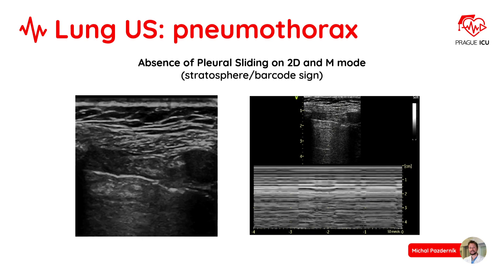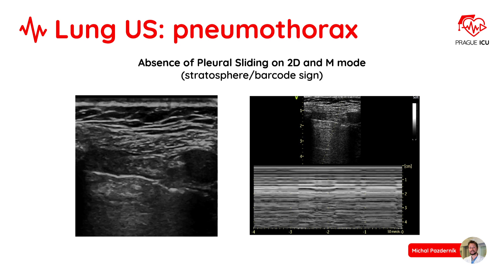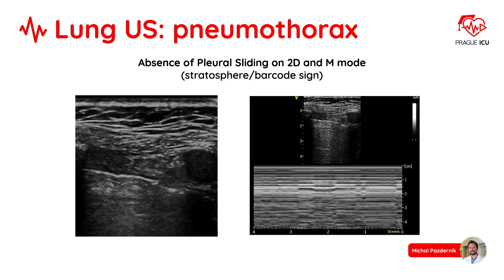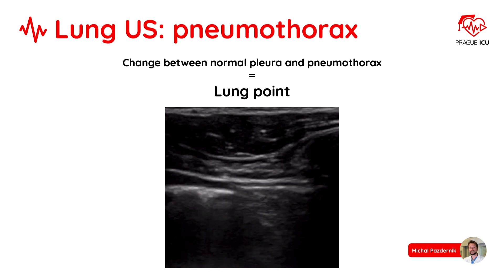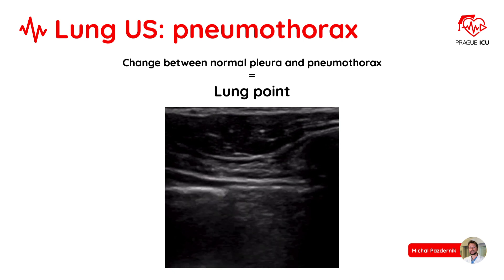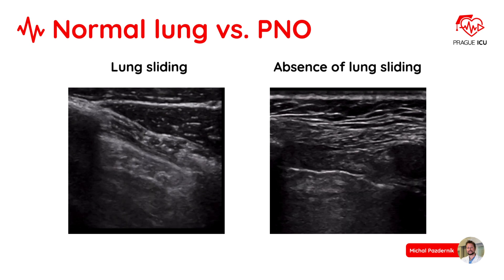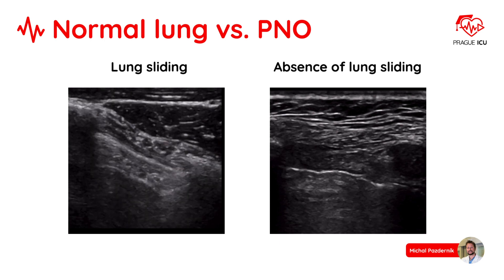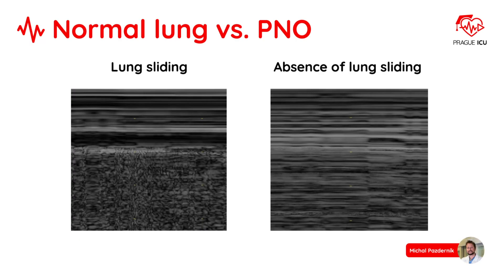Now we will look at how to diagnose a pneumothorax. The main sign of pneumothorax is absence of lung sliding on 2D echo, as seen on the left video. On M-mode, we cannot see the seashore sign but we can see the barcode or stratosphere sign. The stronger evidence of pneumothorax is the presence of a lung point, which is represented by lung sliding and absence of lung sliding on one image. The next slide shows an overview of M-mode appearance in normal lung — seashore sign — and in pneumothorax — barcode or stratosphere sign.